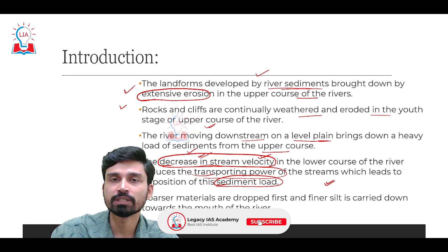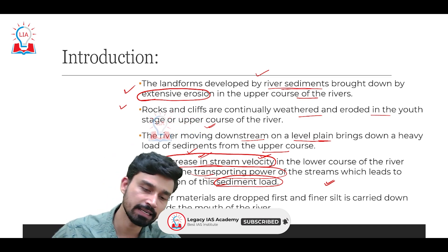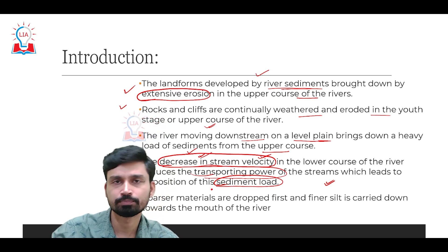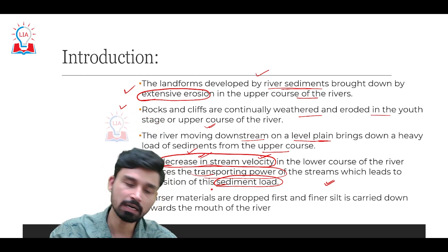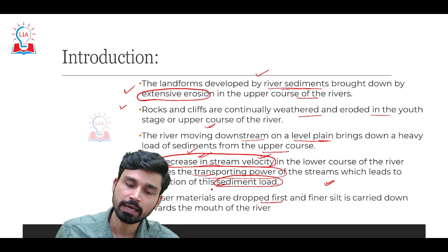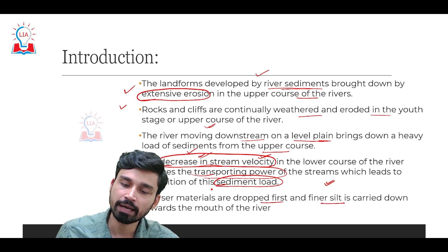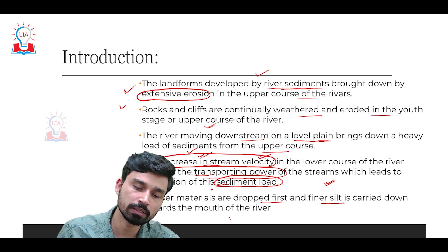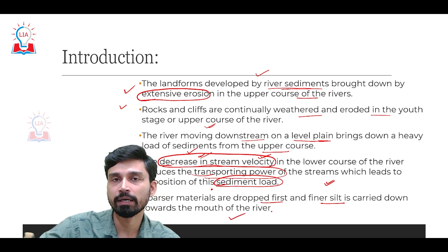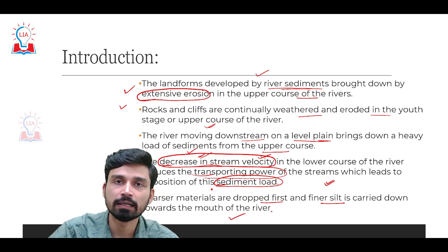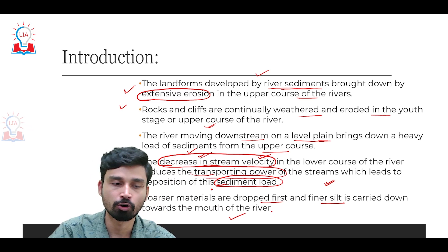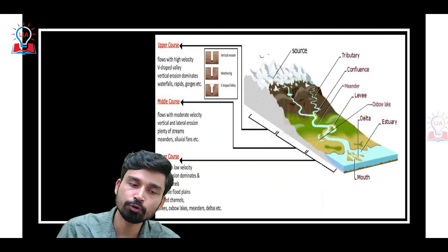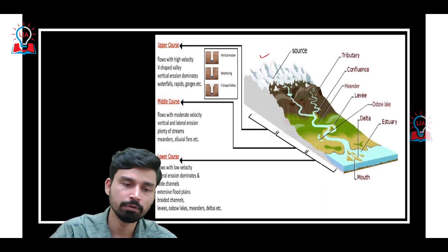Since the river carries a huge amount of sediment of varying sizes, the coarser materials — larger-sized sediments — are deposited first, and then the finer, smaller-sized particles are carried toward the mouth of the river. Many times these finer particles form a delta where the river enters the ocean or sea. To understand the depositional work of the river, we can divide the overall stretch of the river into three different courses.